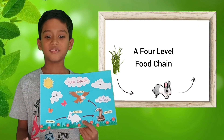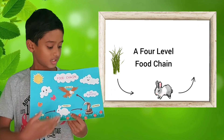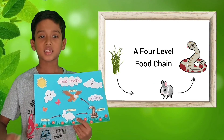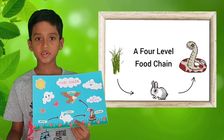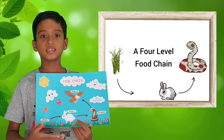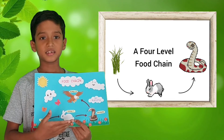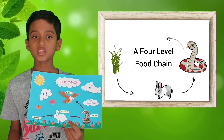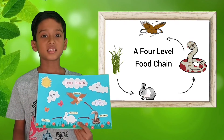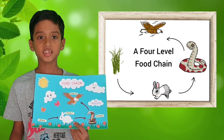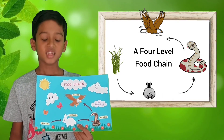At level 3 is the snake, the secondary consumer. It eats the rabbit. At level 4 there is an eagle which preys on the snake. Thank you.